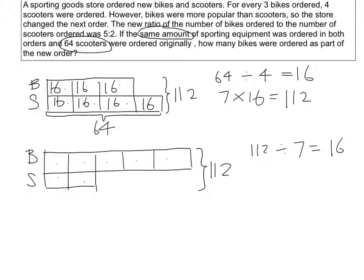So they want to know how many bikes were ordered. So there were 16 in each box. So there should be 5 boxes times 16. So the answer is 80 bikes were ordered.